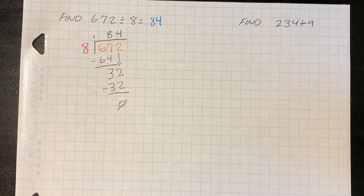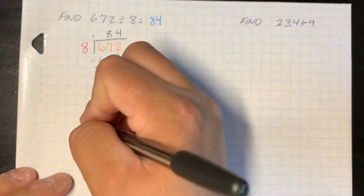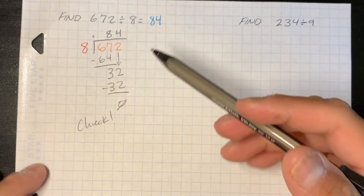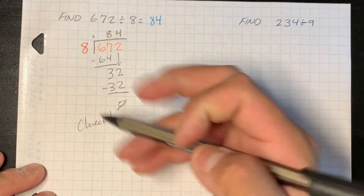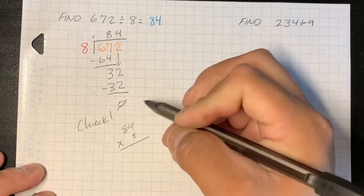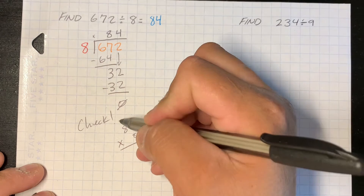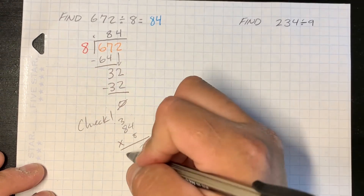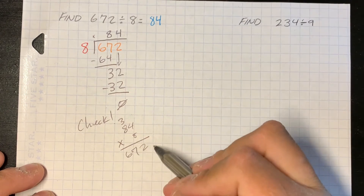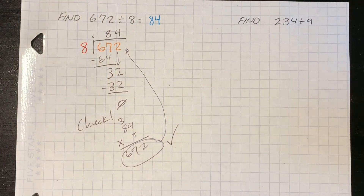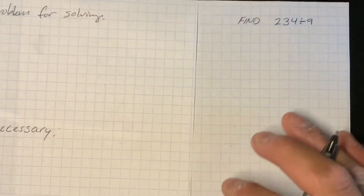We want to check our work by doing the inverse operation of division, which is multiplication. We multiply 84 times 8: 4 times 8 is 32, 8 times 8 is 64, 64 plus 3 is 67, giving us 672 — which matches your dividend. So it checks out.